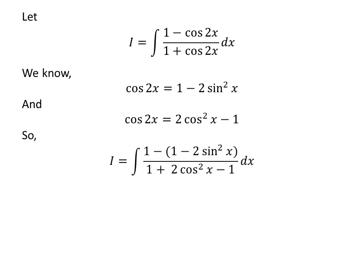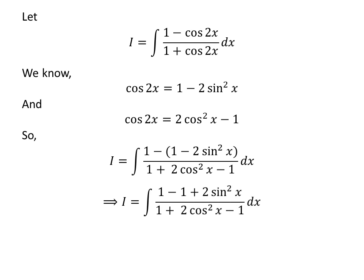I replaced cosine of 2x in the numerator of the integrand with (1 minus 2 times square of sine of x). In the denominator, cosine of 2x was replaced by (2 times square of cosine of x minus 1). After removing the brackets, 1 and minus 1 cancel out in the numerator and the denominator.